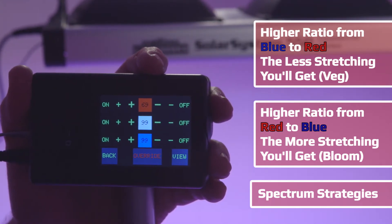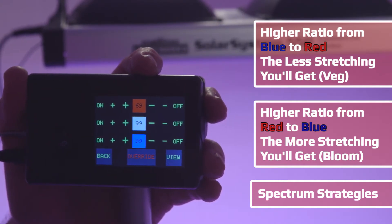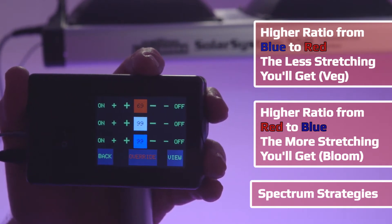Higher ratio of red means longer spaces between nodes. Most people in veg prefer a higher ratio of blue so plants are bushier and shorter with less space between nodes. Then once you shift to bloom, the high red will make the plant stretch as it goes into flower.